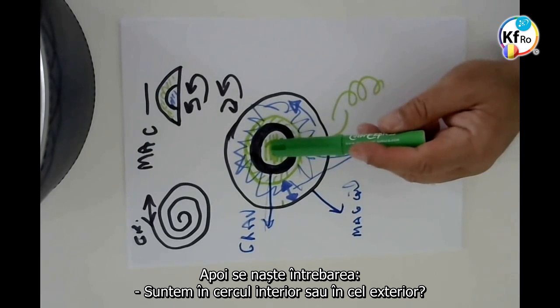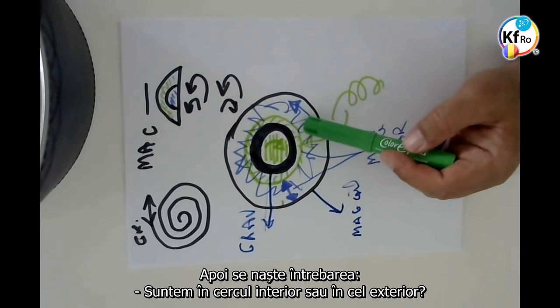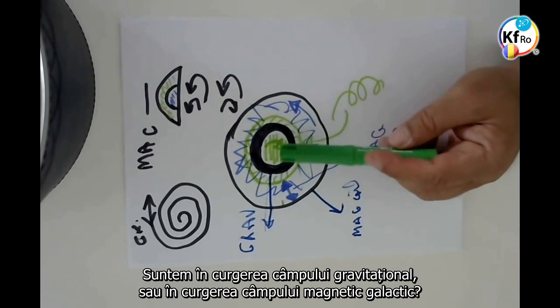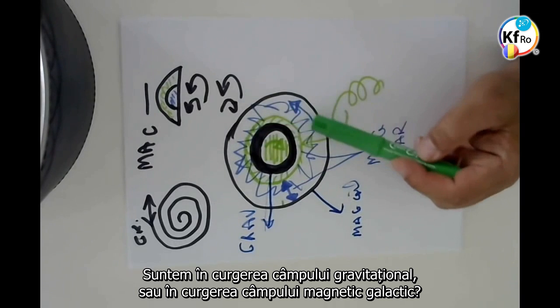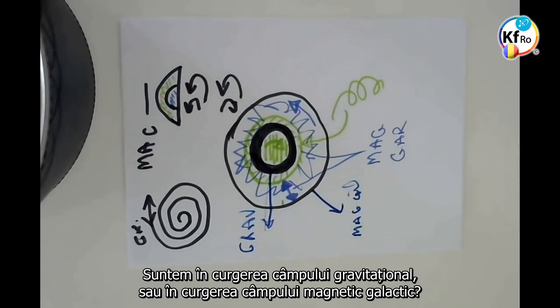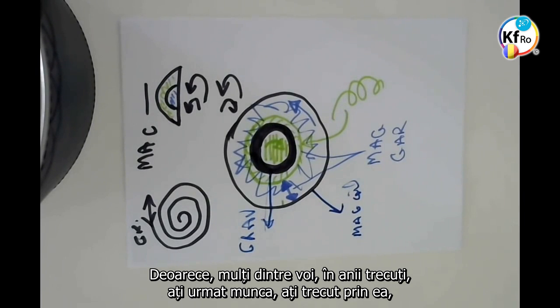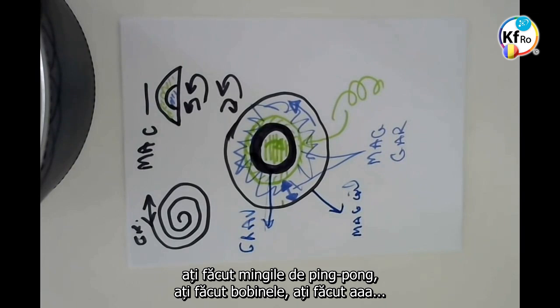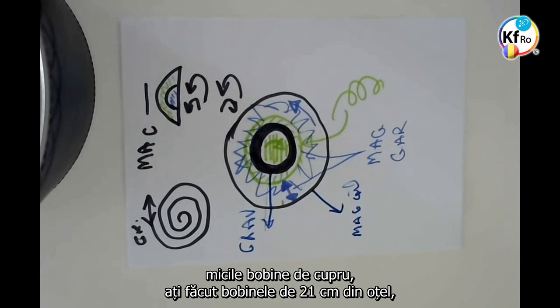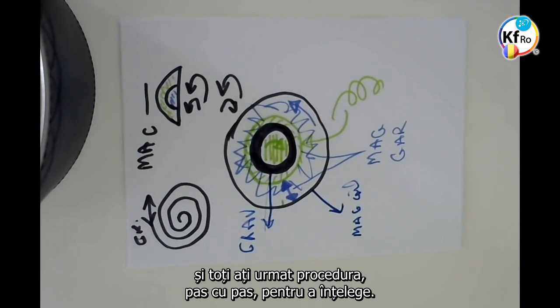Then the question to ask: are we in the inner circle or are we in the outer circle? Are we in a Gravitational Field Flow of Galaxies or are we in a Magnetical Field Flow of Galaxies? There is a reason I raise this point. Because a lot of you in past years have followed the work, have been through it. Made the ping-pong balls, made the steel coils, made the small Copper coils, you made the 21 centimeter coils from the steel. And we all followed the procedure step by step to mature, to understand.